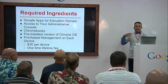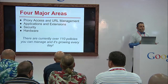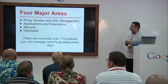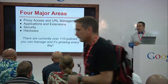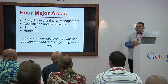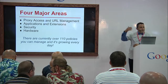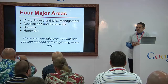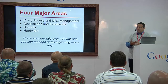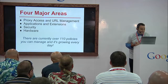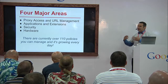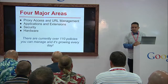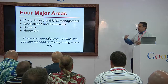Once you have all this, you'll have the ability to manage those devices across four major areas. First is proxy access and URL management — you're able to block websites on these devices. Not only are they blocked on your filter, but you can also block them through Chromebook management. If you block Facebook on the Chromebook, the kids can't get to Facebook no matter where they are or what proxy they're going through — not even at home. There are also applications and extensions you can push out, security features, and hardware features.